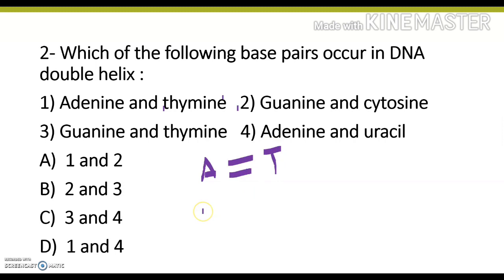And the second base pair which is present in DNA is guanine and cytosine with three hydrogen bonds. So the answer of this question will be A: 1 and 2, which means adenine and thymine, guanine and cytosine.